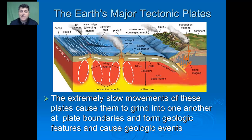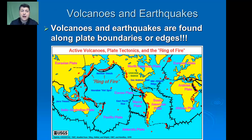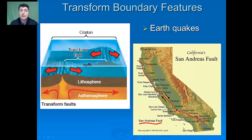The extremely slow movement of these plates causes them to grind into one another at plate boundaries, forming geologic features and causing geologic events. Where plates encounter one another, we find mountains, ridges and valleys, volcanoes, and earthquakes. In fact, most major volcanoes and earthquakes occur along plate boundaries. The greatest number of active volcanoes in the Pacific follow what's called the Ring of Fire. Where tectonic plates interact, it forms one of three major boundary features.